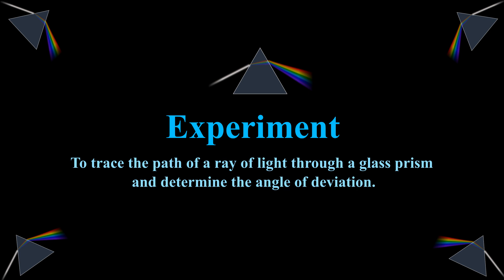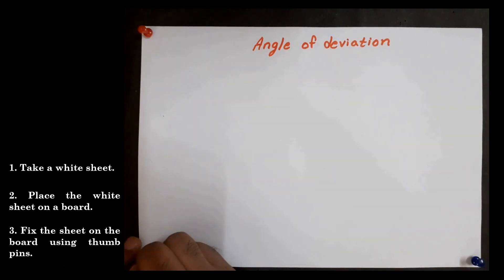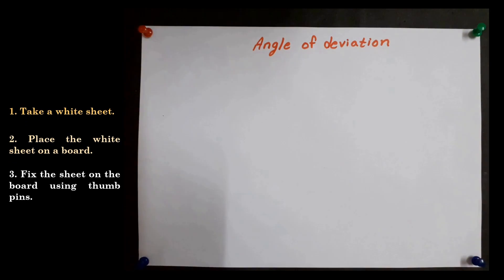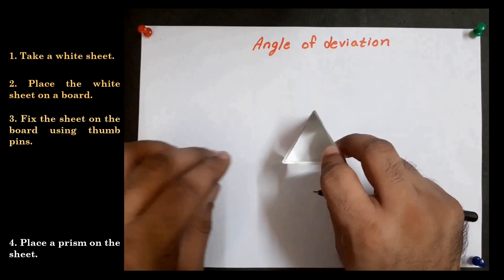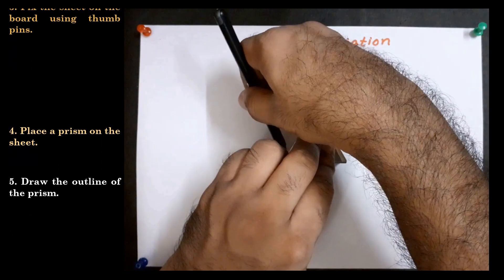Now we will do an experiment to trace the path of a ray of light through a glass prism and to determine the angle of deviation. Take a white sheet. Place the white sheet on a board. Fix the sheet on the board using thumb pins. Place a prism on the sheet. Draw the outline of the prism.